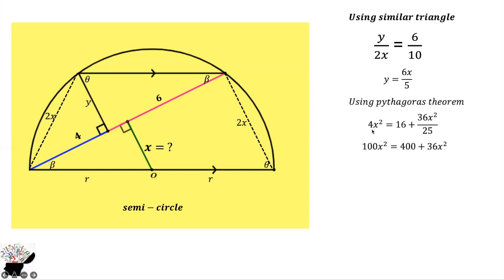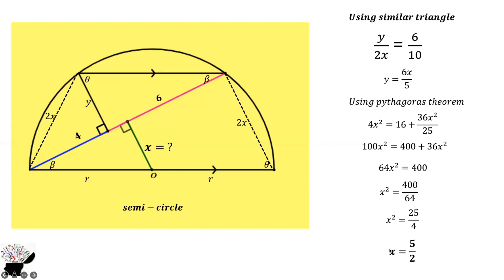Subtracting 36X squared from both sides gives 64X squared equals 400. Dividing by 64, X squared equals 400 divided by 64, which simplifies to 25 divided by 4. Taking the square root, X equals 5 over 2. I hope you got it correct — thank you for watching, and please subscribe to my YouTube channel for more educational videos.